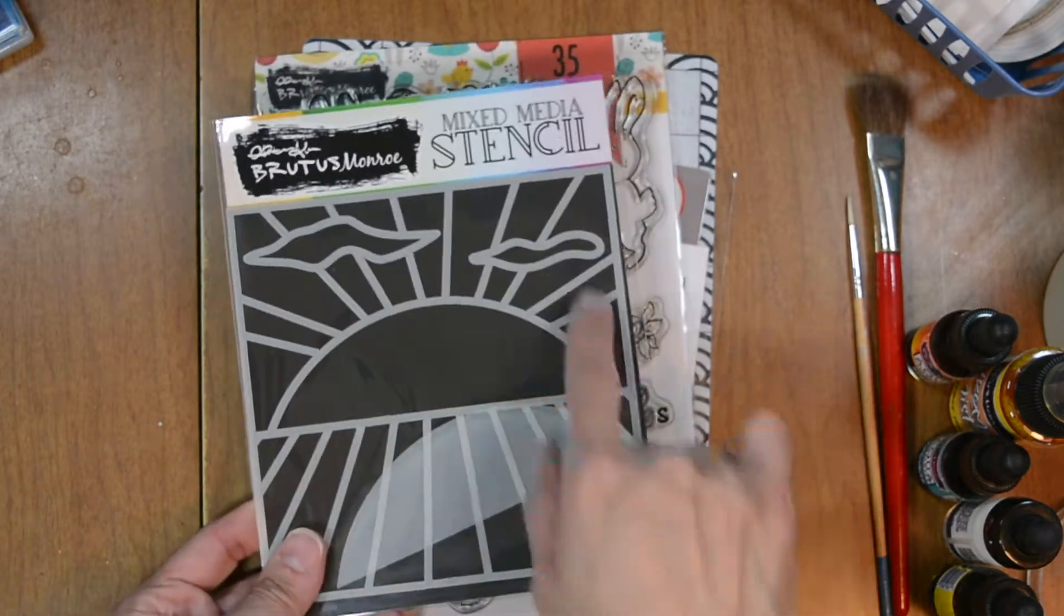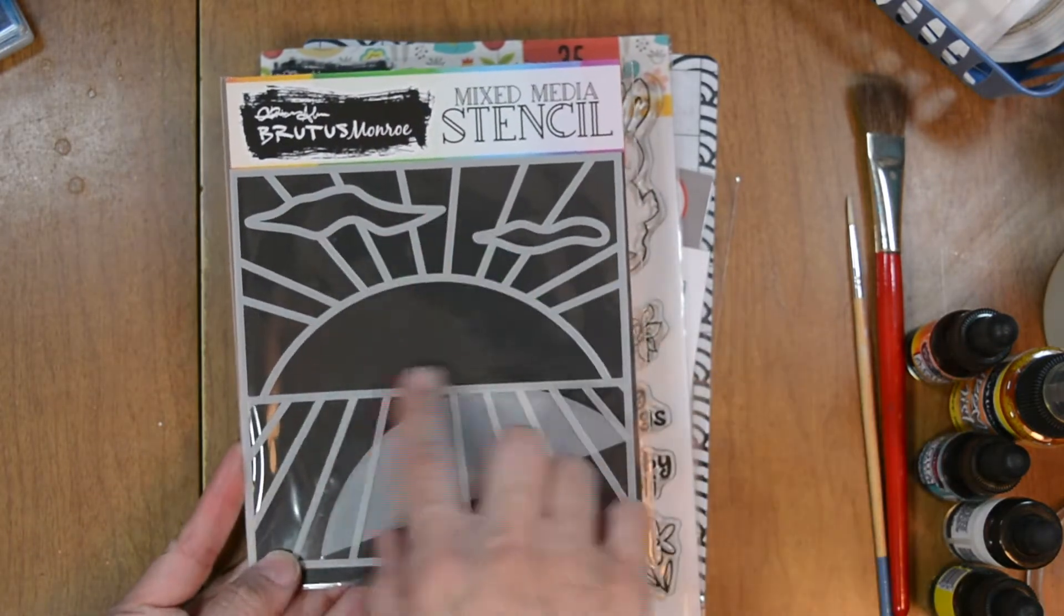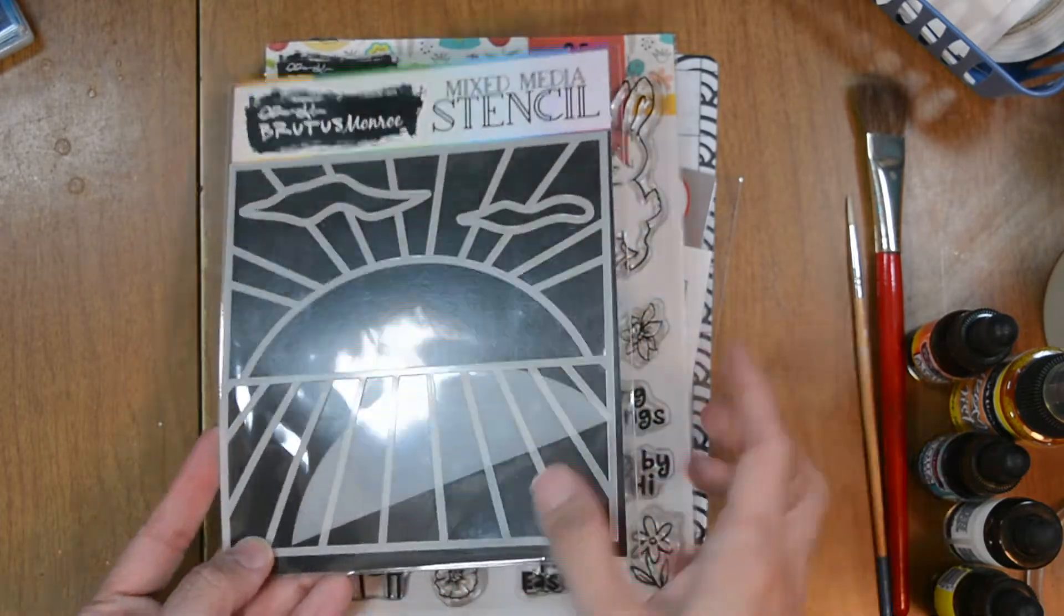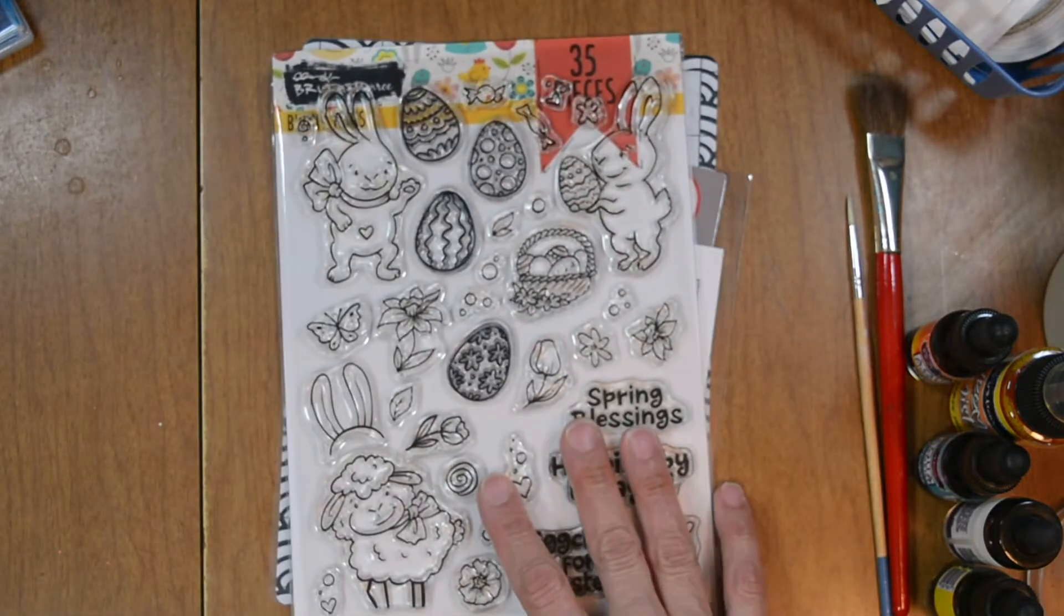Let's go over some of the products I used to create this card. Our new mixed media stencil called Stained Glass Garden. It has a sun, a field, some clouds, and actually a mask for your sun if you'd like to use that.